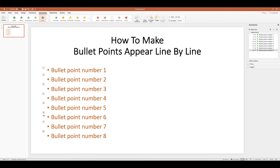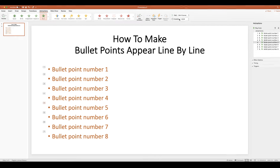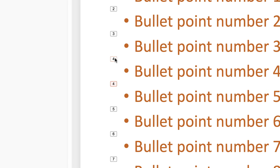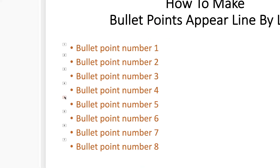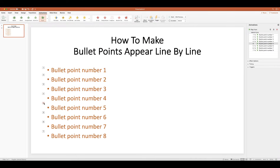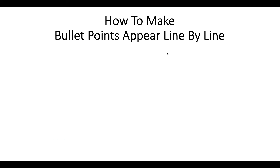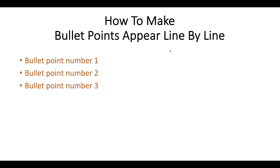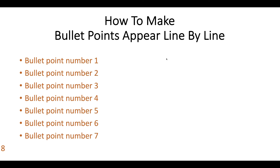If you want two bullet points to come in together — say bullet points four and five are related — simply click on that number and go up to click With Previous. That turns it into number four as well. When bullet points share the same number, they come into your presentation at the same time. In the slideshow, when you click the mouse you'll see two bullet points arrive together, then the rest continue in sequence.